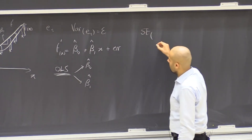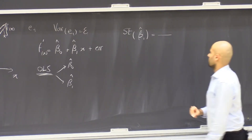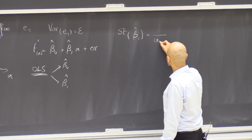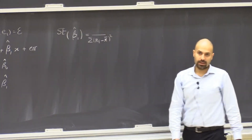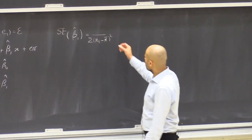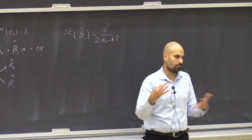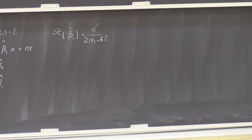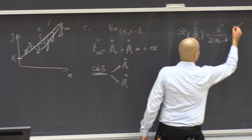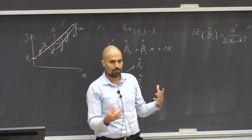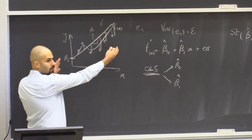The standard error around beta hat one is equal to a fraction. In the denominator, we have the sum of the squared differences between x_i and x bar. In the numerator, we have sigma squared, which is the variance of the error — the noise in the data generation process. This means that when the amount of noise in the data generation process is smaller, we can make more accurate estimates of the slope. And if the values of x are more spread out, then we can make better estimates.